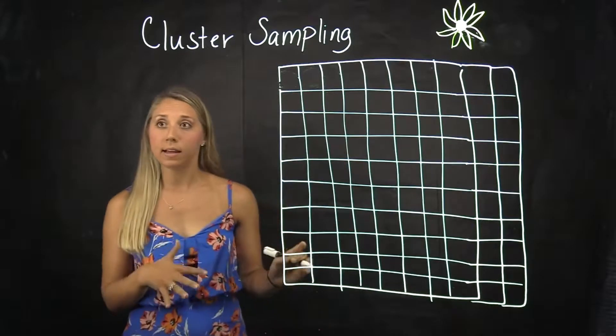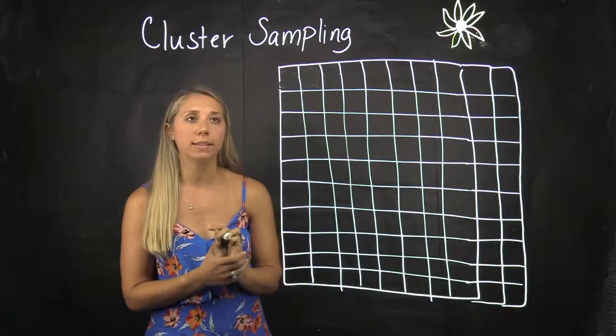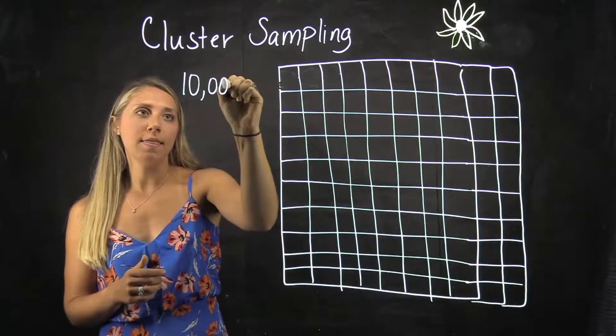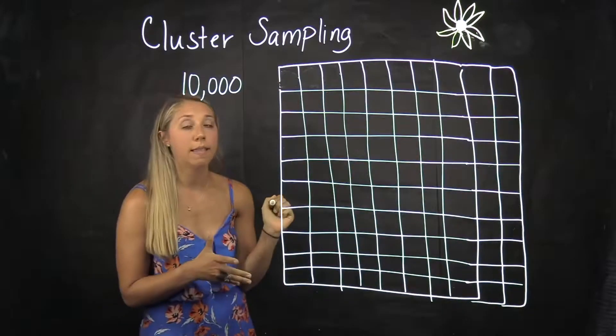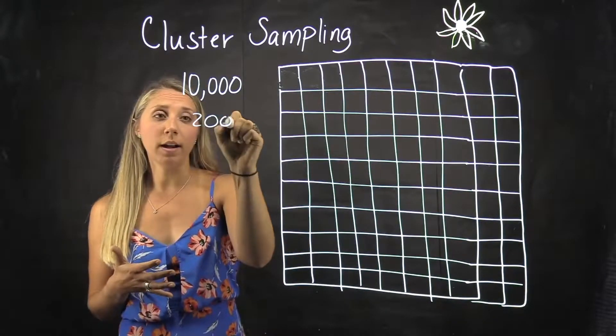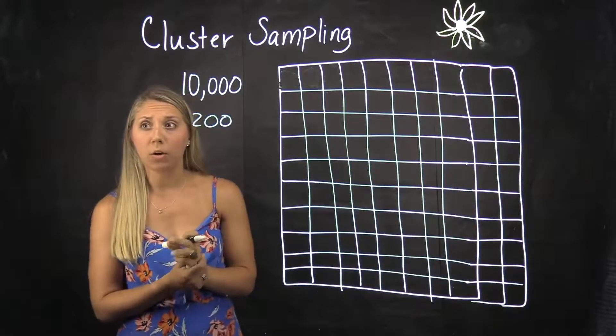So a great example of this is that sunflower field that we have talked about in previous examples. So if you recall, we assumed there are 10,000 sunflowers in that field. We want to only sample 200 of them and we want to measure the heights to see on average how tall they are.